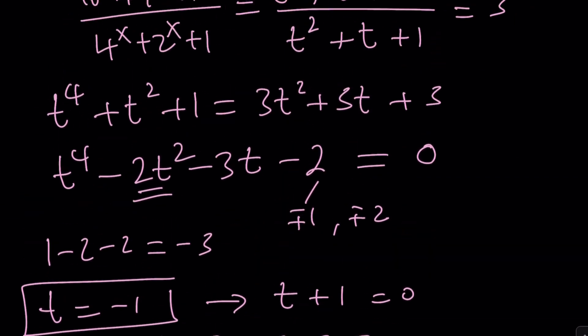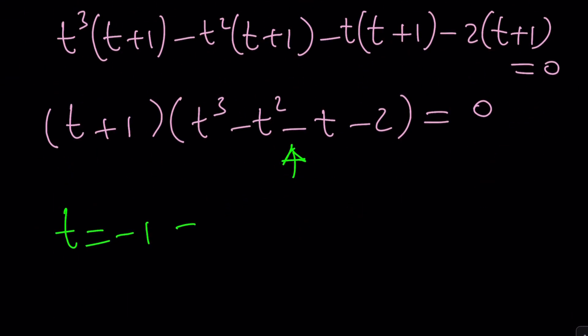well t is 2 to the power x so that's not super helpful is it? well 2 to the power x equals negative 1 is gonna give us complex solutions if you think about it you can basically write this as e to the power